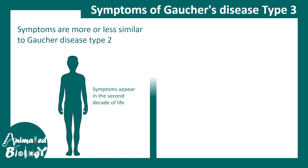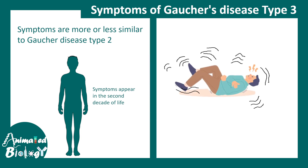The neurological symptoms are present, but their onset is slow. One of the most prevalent symptoms found in Gaucher disease type 3 is recurrent seizures.